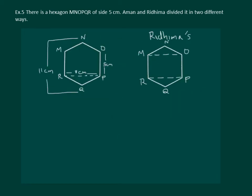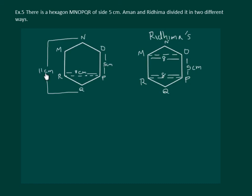Now let us look at Riddhima's figure. She divided the hexagon into two congruent triangles MNO and RPQ, and a rectangle MOPR. From the original figure, RP = 8 cm, NQ = 11 cm, and OP = 5 cm. To find the height of the triangles, we subtract 11 − 5 = 6 cm, so the height of each triangle is 3 cm.